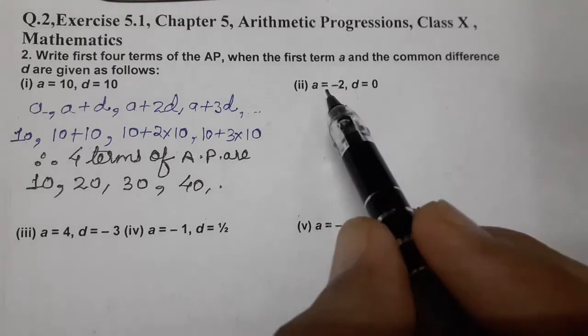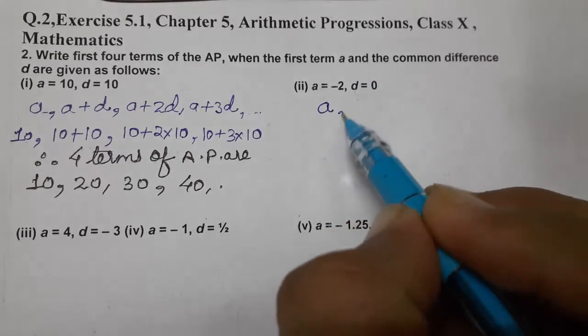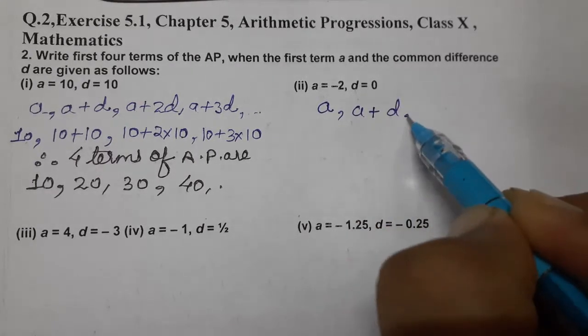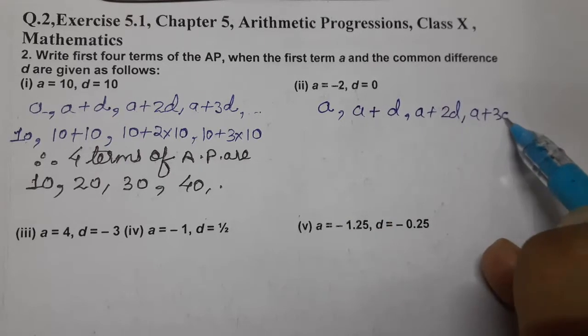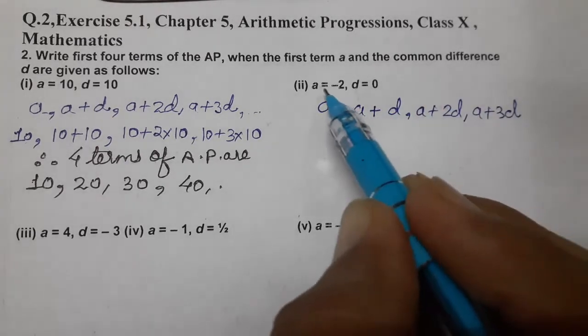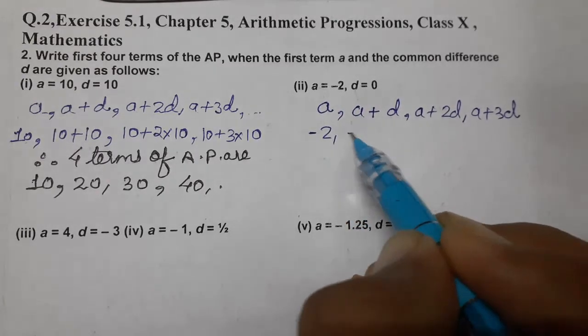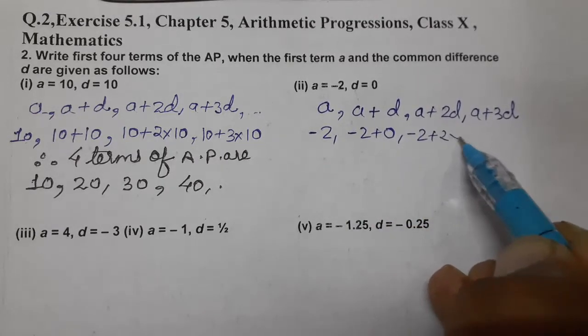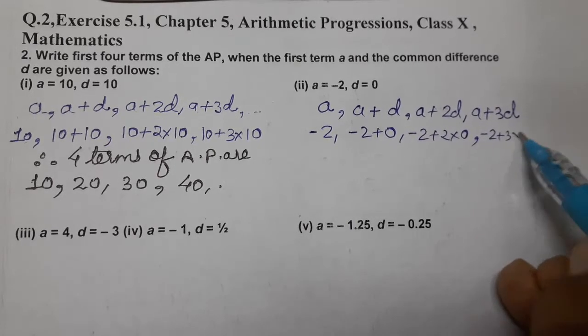Next comes, A is minus 2, D is 0, so again we know the AP, AP is A, A plus D, A plus 2D and A plus 3D. So, put kar do value, A kitna minus 2, D 0 hain, A hain minus 2, minus 2 plus 0, minus 2 plus 2 into 0, minus 2 plus 3 into 0.